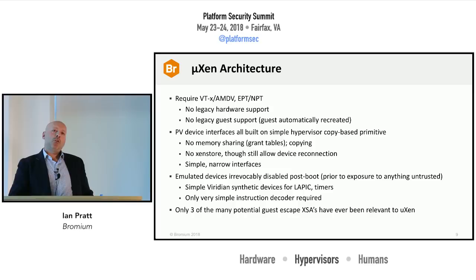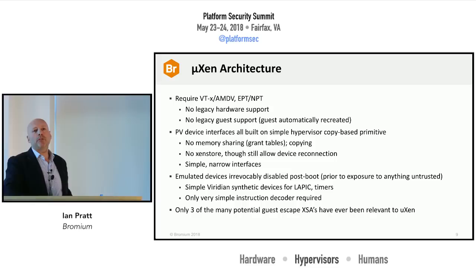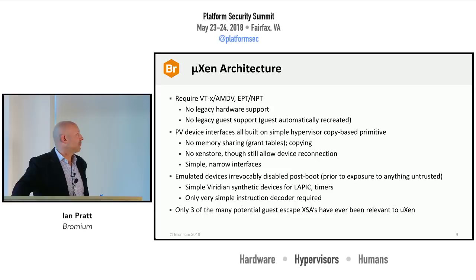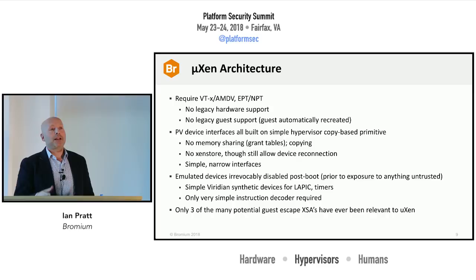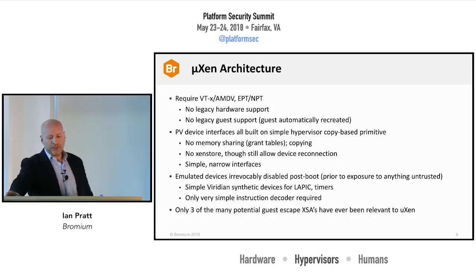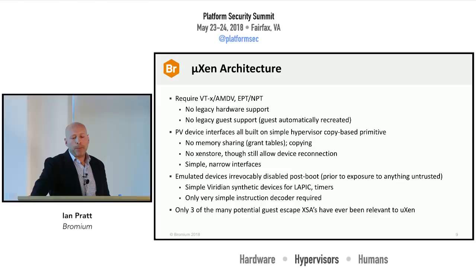We wanted to simplify things as much as possible, and obviously required VT-x, AMD-V, EPT, and NPT — no legacy hardware support. We needed at least a Core i3/i5/i7 processor or equivalent with EPT. We don't have to worry about supporting legacy guests, because we create the VMs based on the software already running on the host, so we know there's no legacy. Huge amounts of code were removed. We can make sure everything uses PV devices, with a very simple copy-based primitive for communication between VMs and the host, building everything on that primitive.